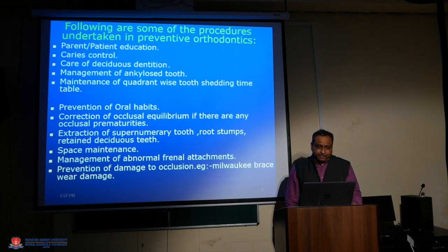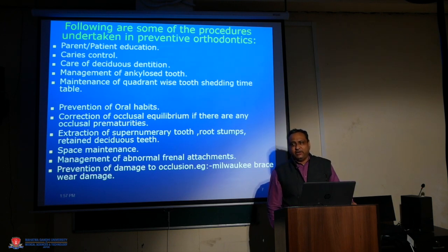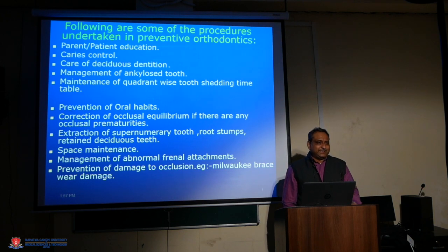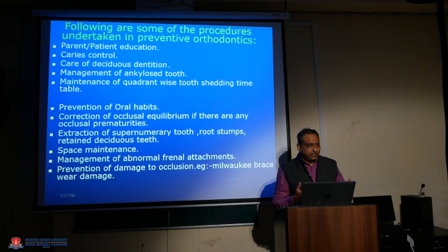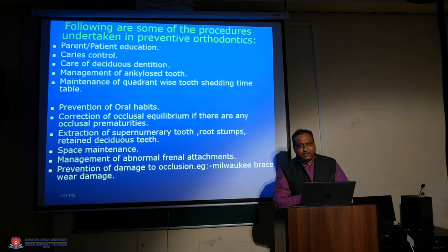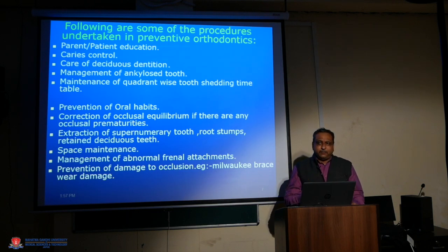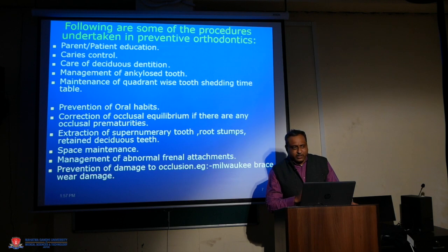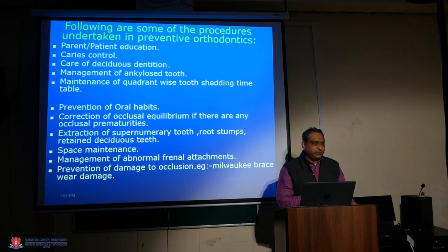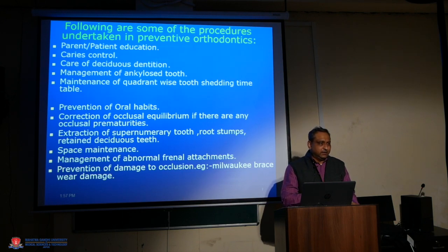The next step is correction of occlusal equilibrium. If there are any occlusal prematurities, these must be addressed. The oral cavity is unique in that the teeth come into contact during mastication and even at rest. The points of contact between the maxilla and mandible are the teeth and the temporomandibular joint. Any occlusal prematurities will affect the developing TMJ, and any abnormality in the TMJ will manifest in the developing dentofacial complex. Correction of occlusal equilibrium is one of the easiest preventive measures we can take.